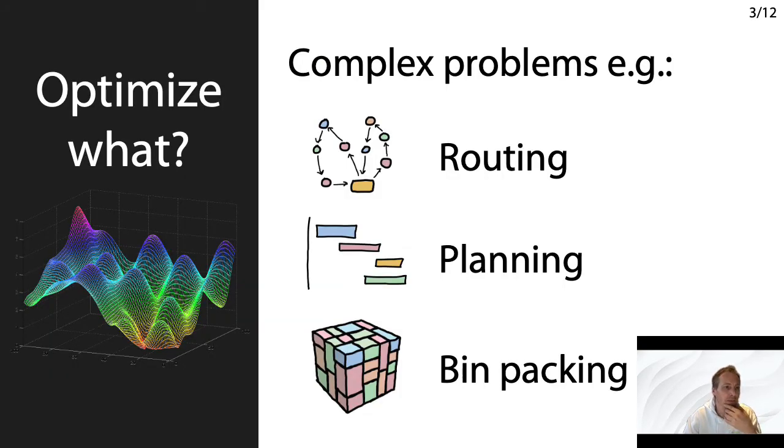So what is it that we're trying to optimize? Well, complex problems such as, for example, routing. This can be routing of physical things like trucks or planes or virtual things like network traffic.